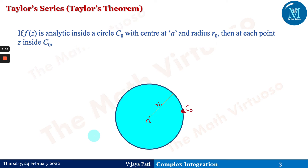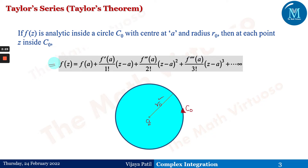Taylor's theorem states that if f(z) is analytic inside a circle C_0 with center at 'a' and radius r_0, then at each point z inside C_0 we have f(z) = f(a) + f'(a)/1! · (z minus a) + f''(a)/2! · (z minus a)² and so on to infinity. This series is known as Taylor's series. In this session we are targeting different types of questions, so we are accepting the statement of this theorem and proceeding to examples.